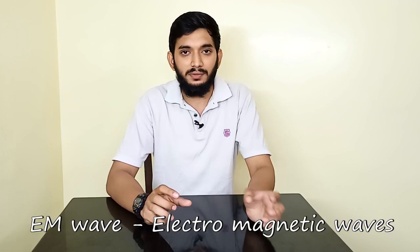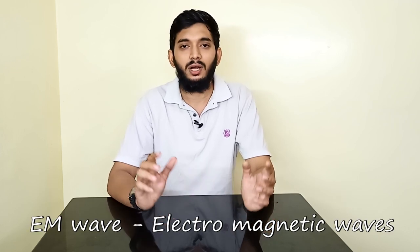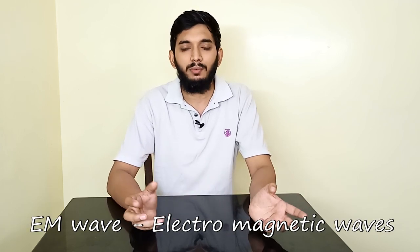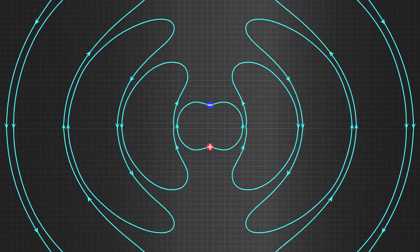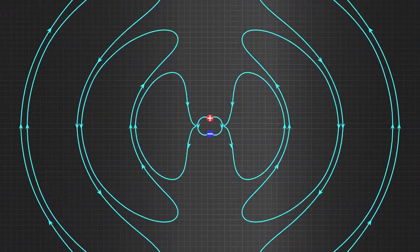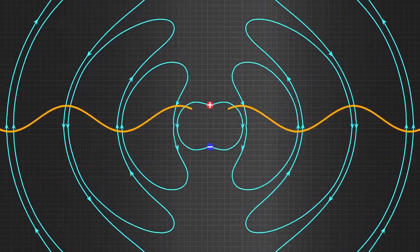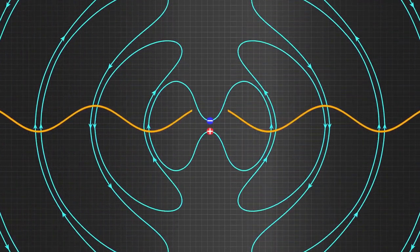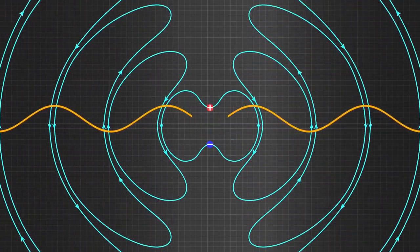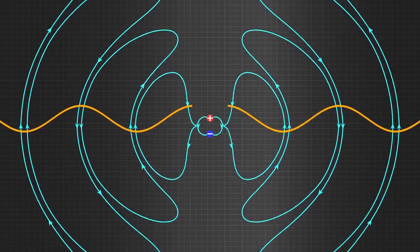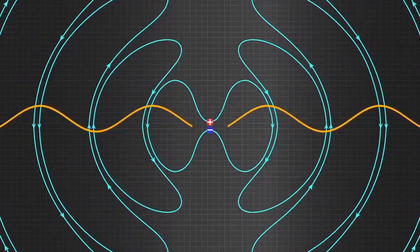This electromagnetic wave has positive-negative ions in the atmosphere. We can use a magnetic field. In this magnetic field, we can use positive-negative ions in the atmosphere. This is the disturbance. We can use the electromagnetic wave — let's see how we can use it.